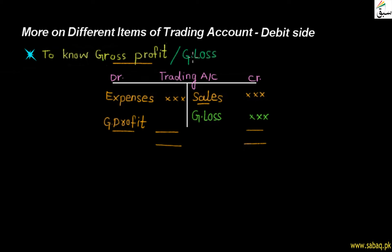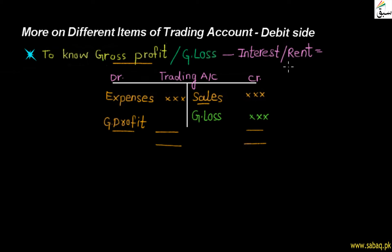Gross profit or gross loss is called as such because we directly minus the expenses related to the product we sell. After gross profit, if we further minus other expenses — such as interest we pay, or building rent — then what remains is the net profit, which is the real profit. It is the profit after deducting all expenses directly related to sales and production.